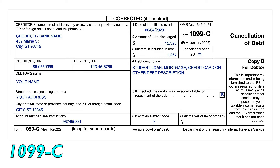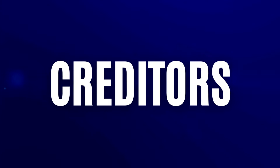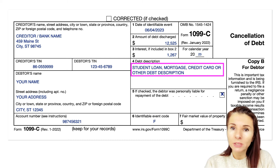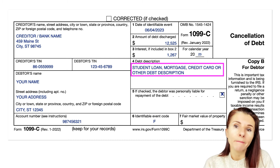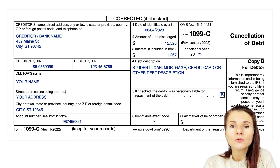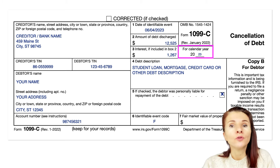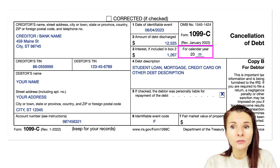When you receive Tax Form 1099-C, it means a creditor forgave or discharged at least $600 of your debt. This could be from a credit company, bank, mortgage company, or other lender. You will need to report it on your tax return for the year the debt was cancelled.